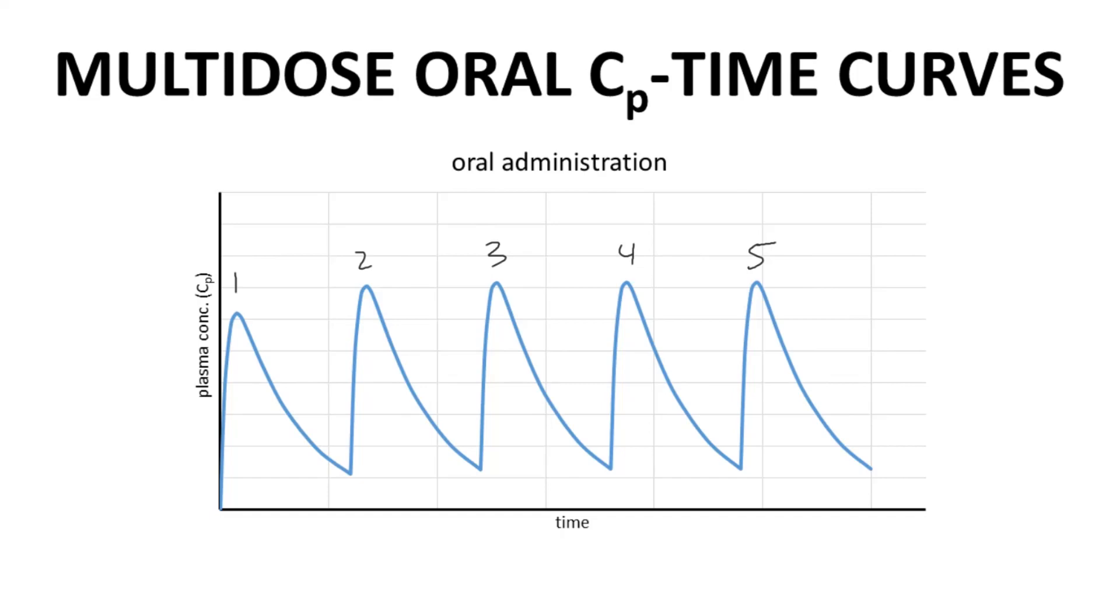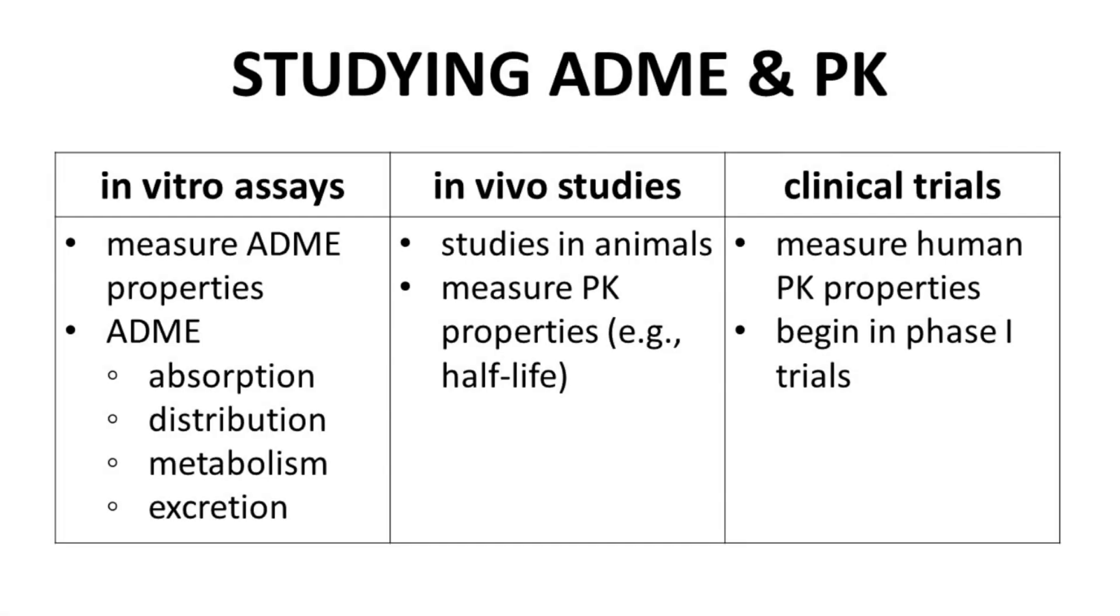How does one gather evidence that a molecule will have a favorable pharmacokinetic profile during the discovery process? We use a combination of in vitro assays and in vivo studies. In vitro assays are used to understand a molecule's ADME properties. ADME stands for absorption, distribution, metabolism, and excretion. These are properties that affect the PK of a molecule. While understanding ADME properties is helpful, promising compounds will subsequently be studied in animals for their PK properties. These are in vivo studies and provide more data for predicting human PK.